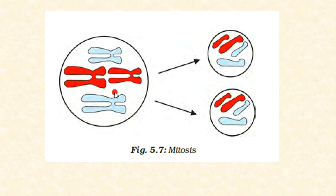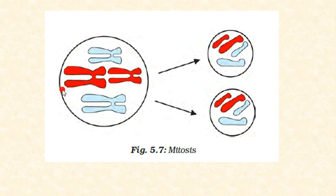In the mitosis diagram, you can see two pairs of chromosomes — two blue and two red — in the mother cell, which finally divide into two daughter cells with the same chromosome number.